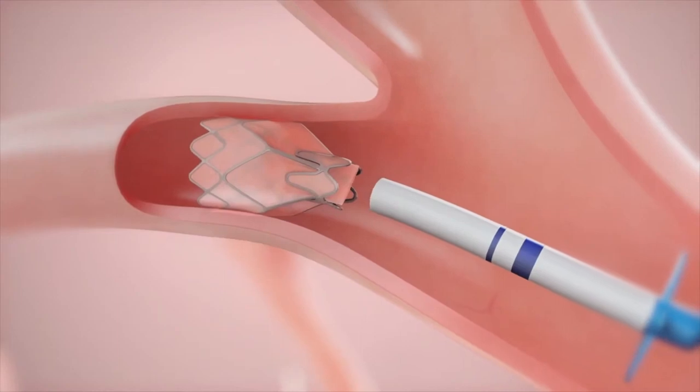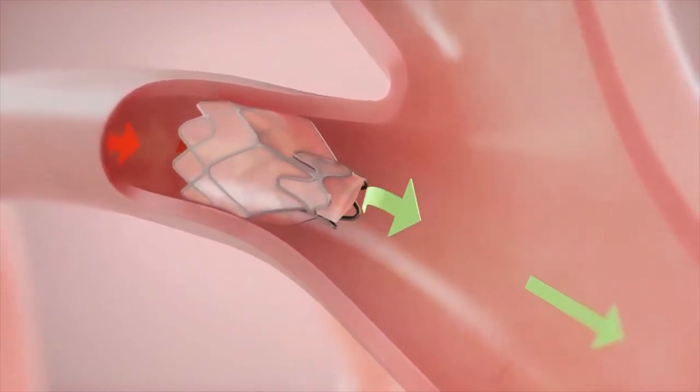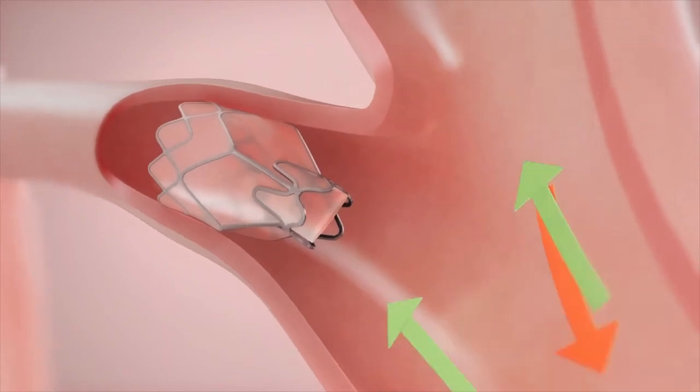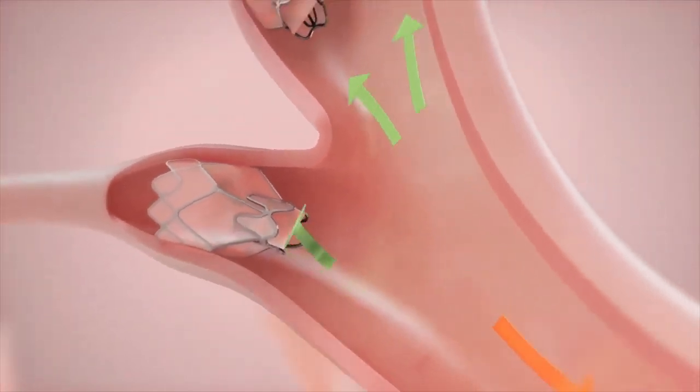Multiple valves are implanted to ensure complete occlusion of all airways leading to the target lobe of the lung. Valves may be placed at the lobar, segmental, or subsegmental levels, dependent on the airway anatomy.